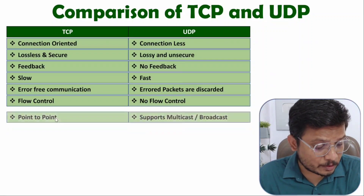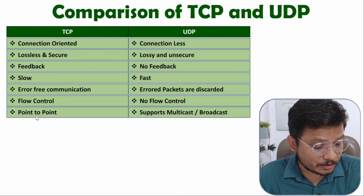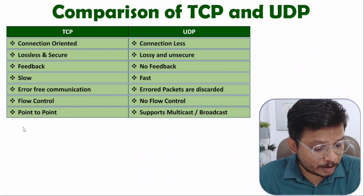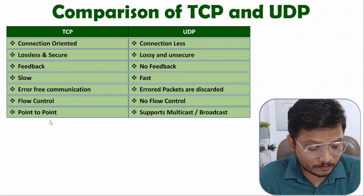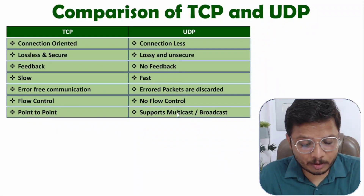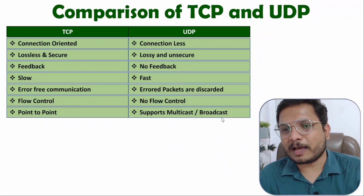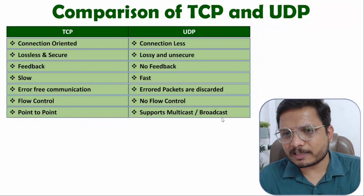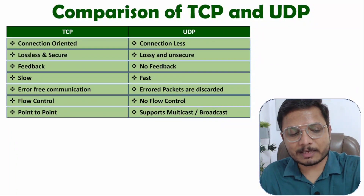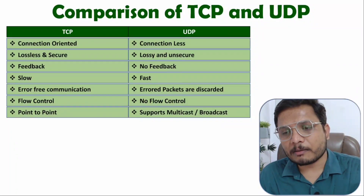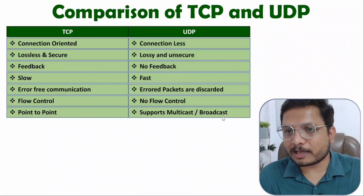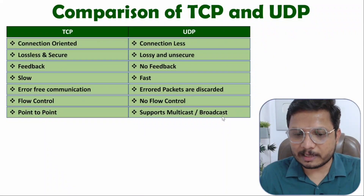When it comes to connection type, TCP usually uses a point-to-point connection, while UDP supports multicast and broadcast. Multicast and broadcast are supported by UDP, while point-to-point connection is used with TCP.